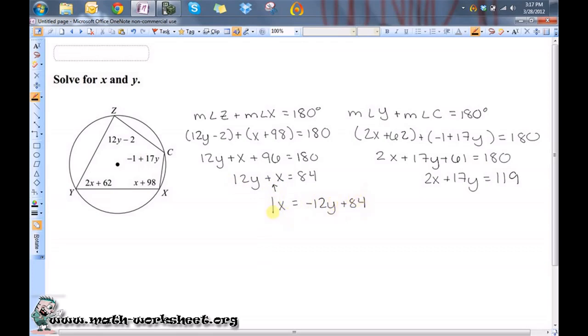So now what I have is an equation for X in terms of Y. That means wherever I see an X in this equation, I can just plug this value or this expression in and then I would only have one variable. I'd only have a Y in this equation here. So I'm going to put this in for X. So I'll have 2 times negative 12Y plus 84 plus 17Y equals 119.